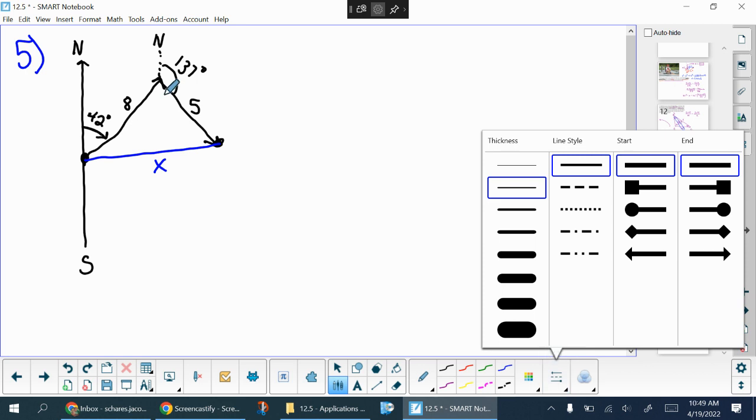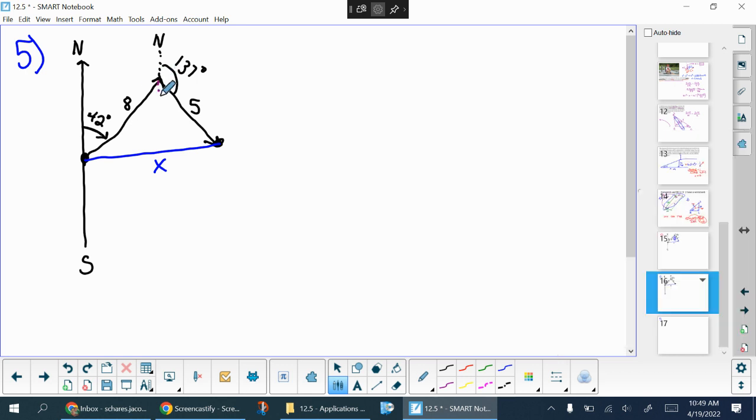First thing we need to find is this angle up here. So here's where we get to the fun stuff. I'm going to extend my north-south line down, and then I can think about these two angles in pieces. So this angle is 42 degrees, because these north-south lines are parallel. These are alternate interior angles. So that's 42. This angle has to be 43 degrees, because the north-south line is a straight line, so 137 plus 43 equals 180. Which means the entire angle that I'm trying to solve for here is 85 degrees.